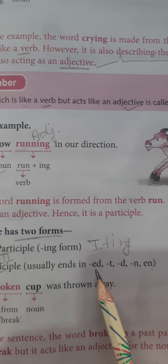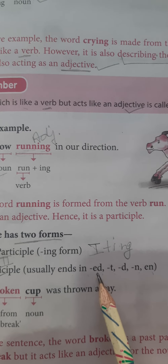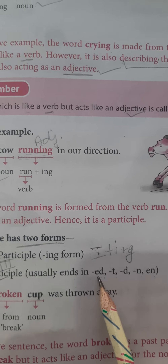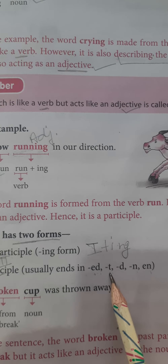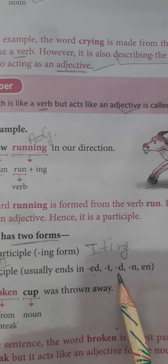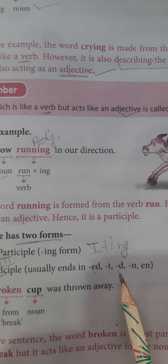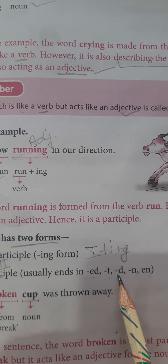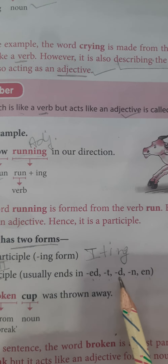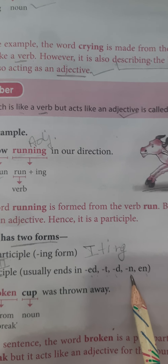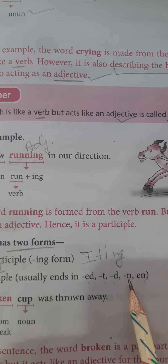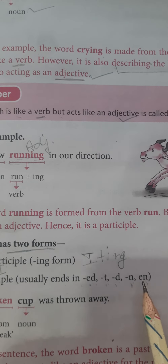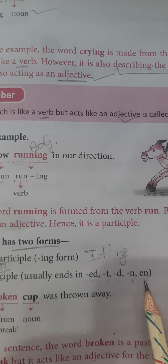For example, third form ending in 'ed': walked, decided. Ending in 't': learnt. Ending in 'd': died. Ending in 'n': tear, tore, torn. And ending in 'en': break, broke, broken.